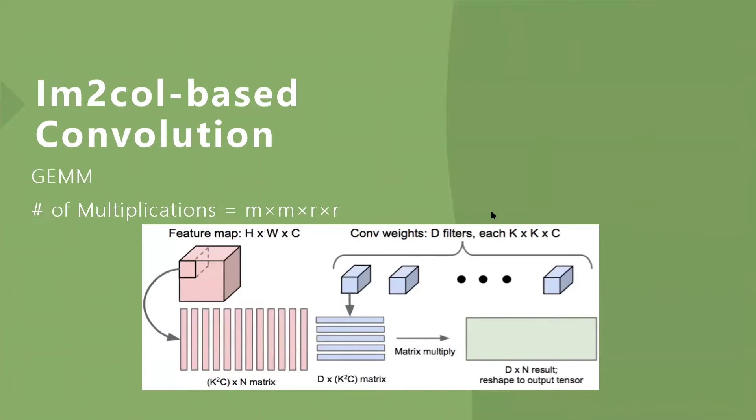We can turn convolution into matrix multiplication, and the method is image-to-column. As the figure shows, for feature map of size H times W times C, first we reshape K squared by C receptive field to column with K squared times C. Then repeat for all columns to get K squared times C by N matrix. For convolution kernel, we reshape each filter to K squared times C, making D by K squared times C matrix. Then the convolution is transformed to a matrix multiplication. Because general matrix multiplication, aka GEMM, is highly optimized in many mathematical calculation libraries, this method can bring great performance improvements. But the number of multiplications is still not reduced.